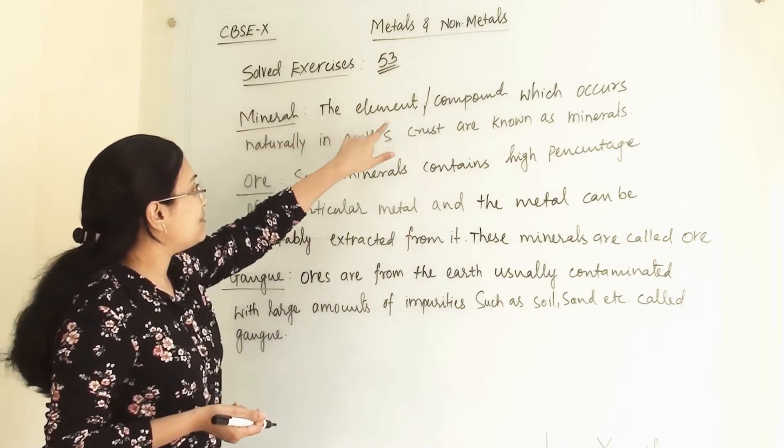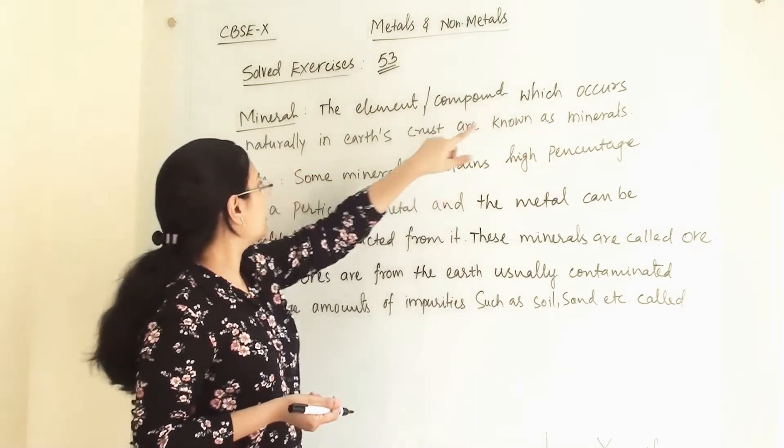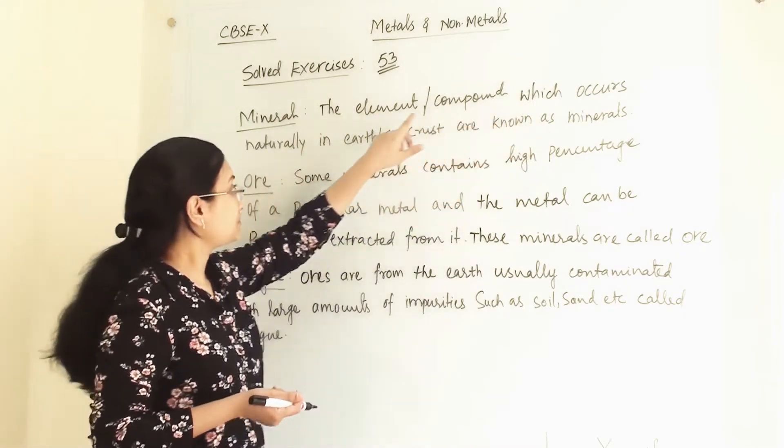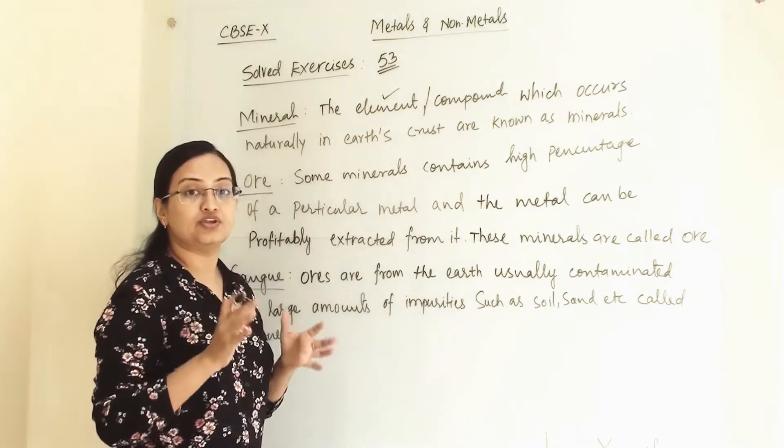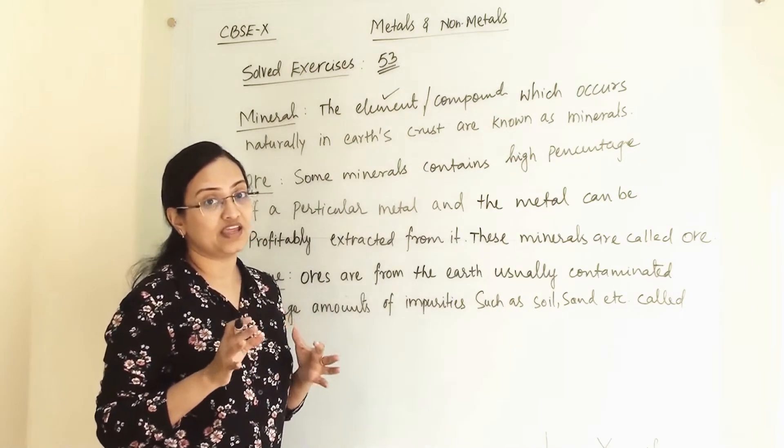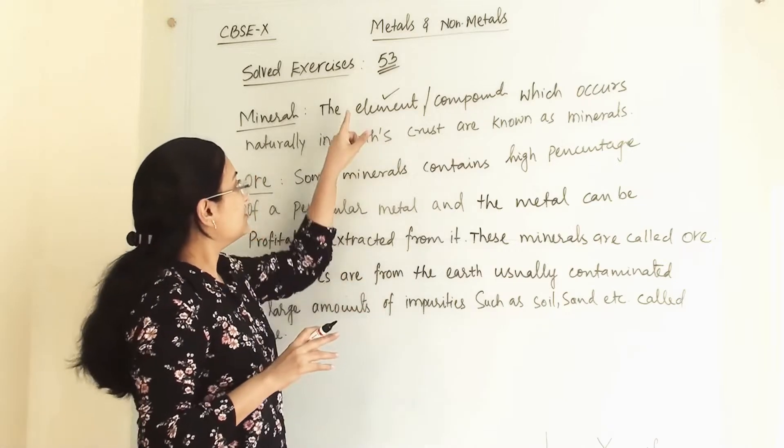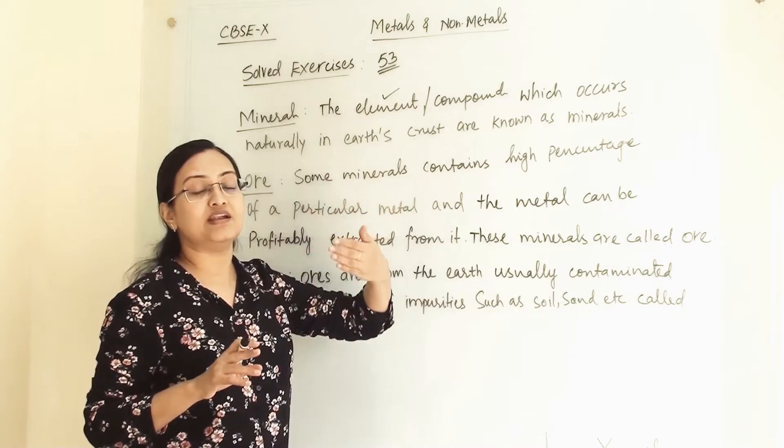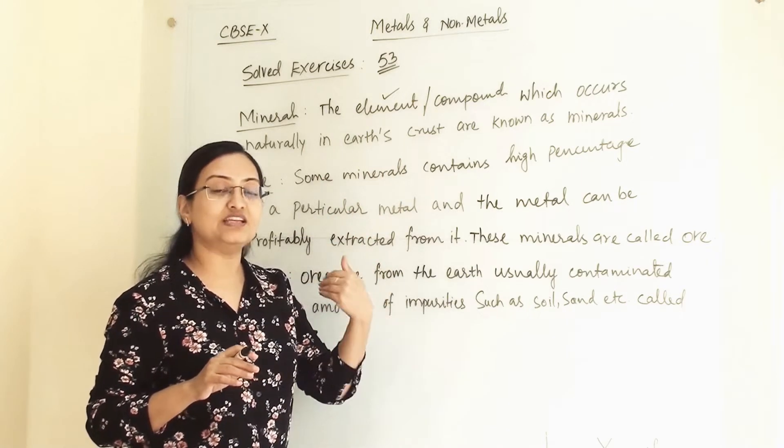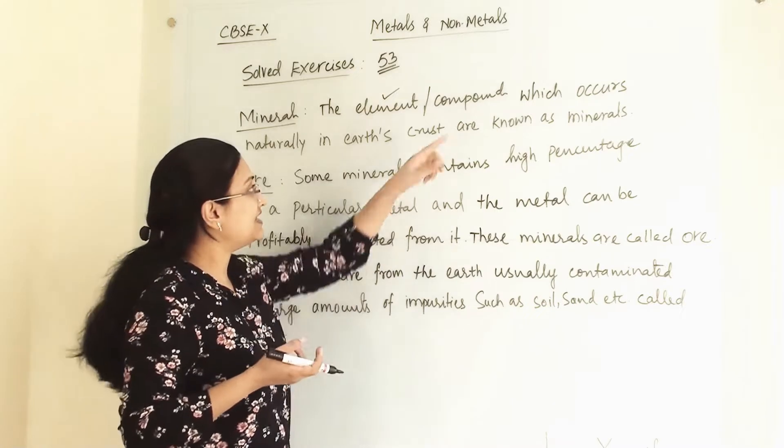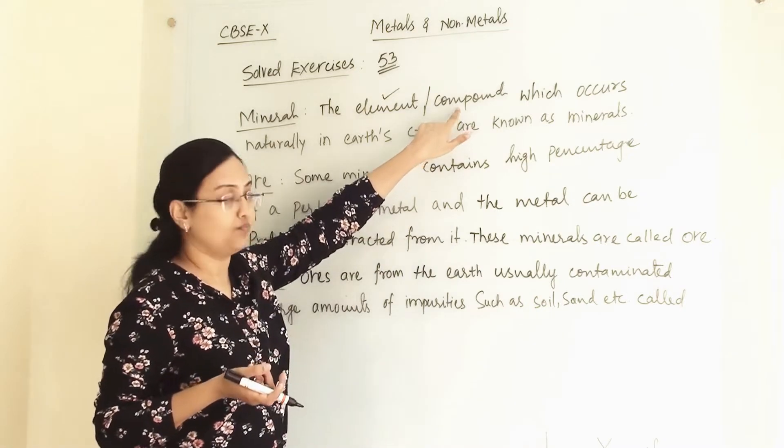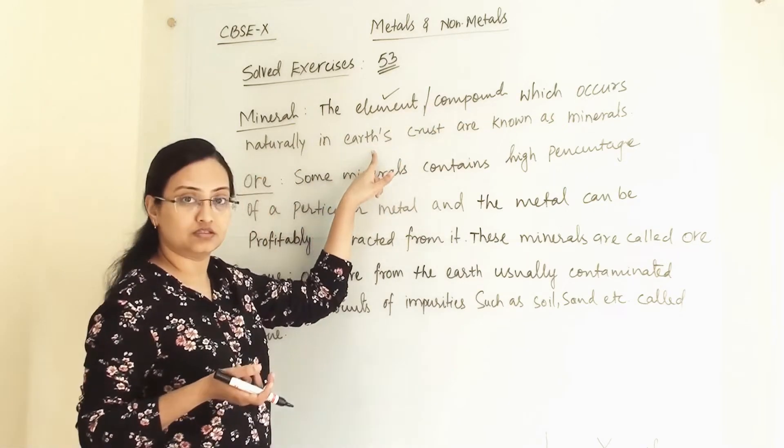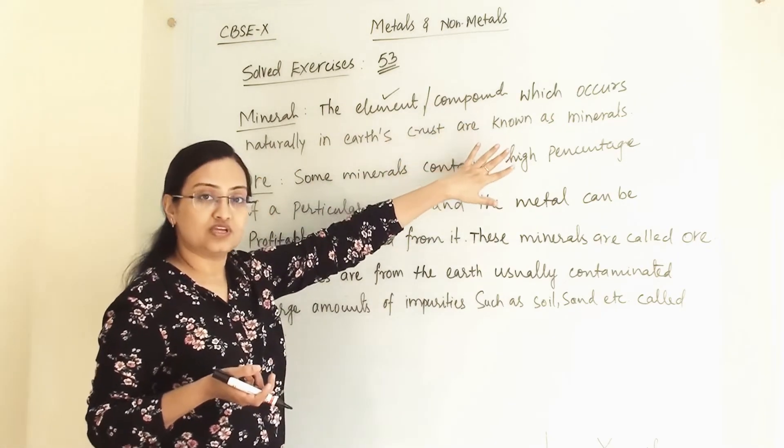Mineral: The element or compound which occurs naturally in earth's crust are known as minerals. We know the periodic table has 108 elements, and from all those elements, any element or if the element is very reactive then it will exist in combined state, then it is in compound form. When this element or compound occurs naturally in earth's crust, then it is known as mineral.